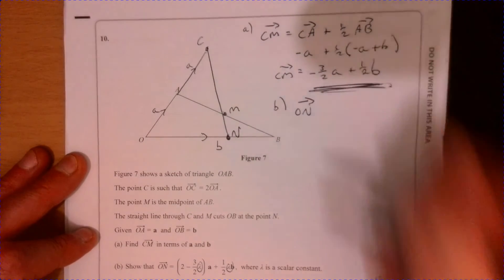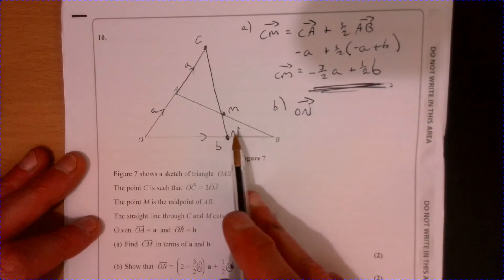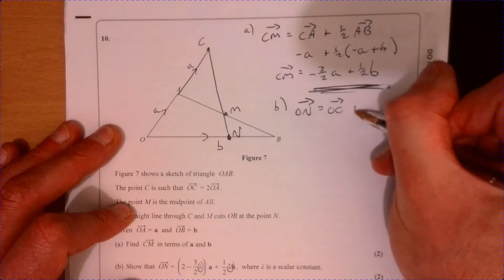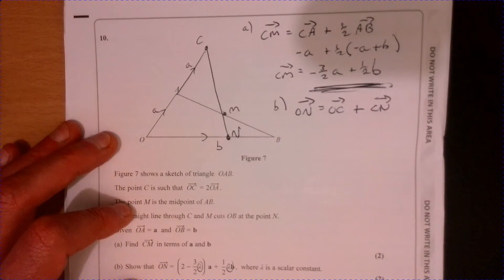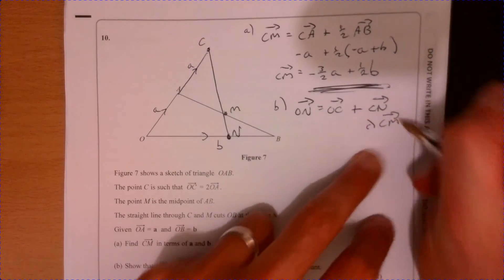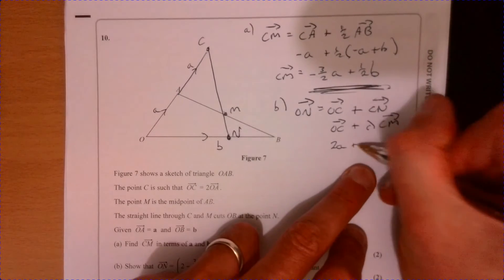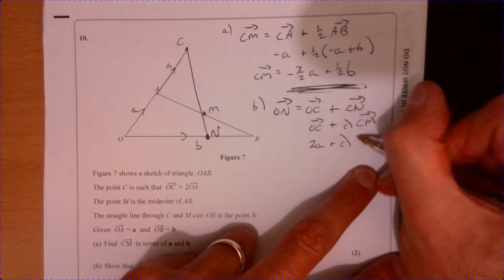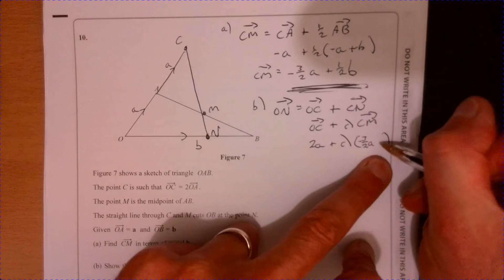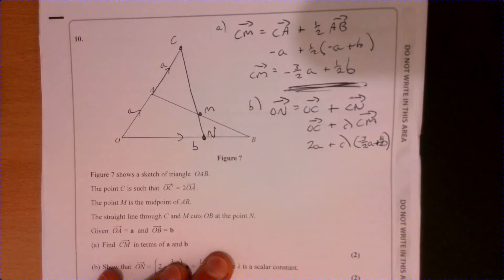Let's have a look at part b. Let's think about how would you work out ON. To go from O to N, remember I don't know how far along the line it is at the moment, so I'm going to go OC and then plus CN. Now all CN is, is it's just an enlargement of CM. OC is 2a, and then we've got lambda times CM.